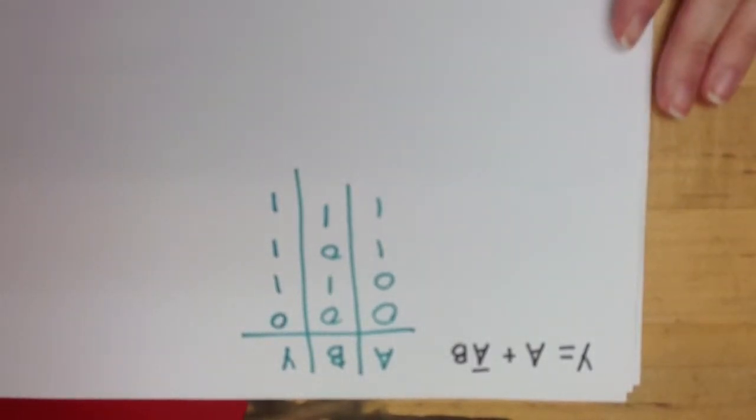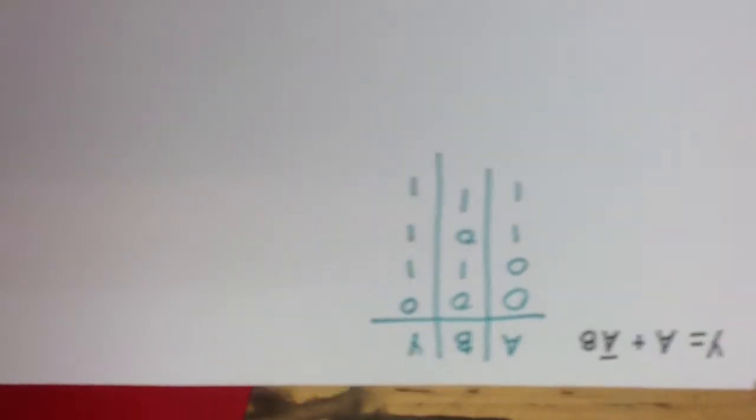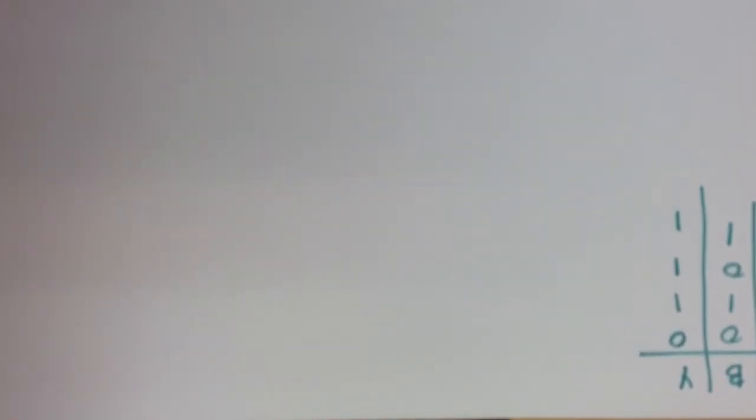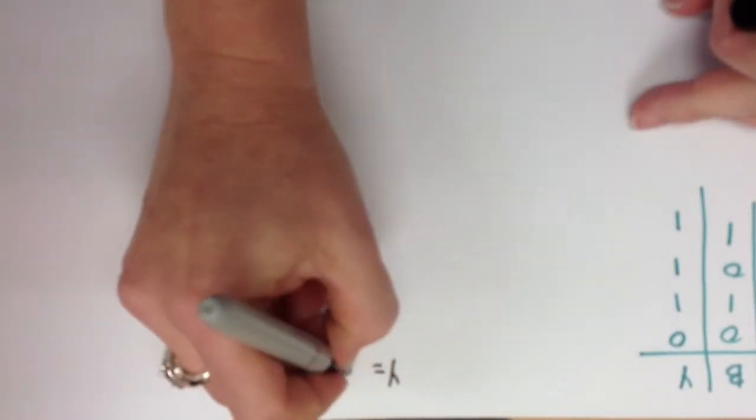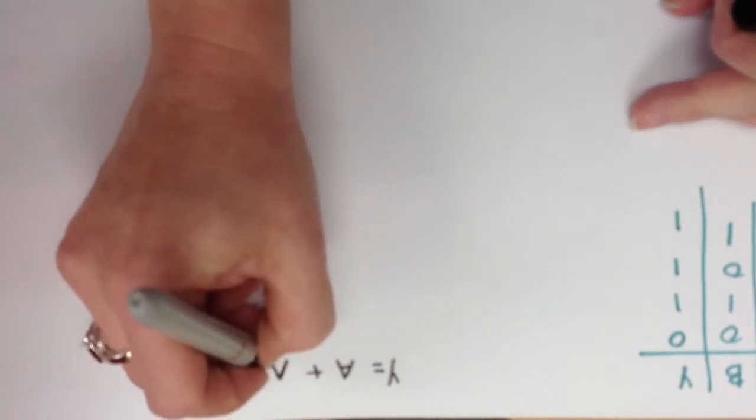Now let's look and see what that would look like in a circuit. Let's slide over a little bit, and we're looking at Y equals A or not A, B.